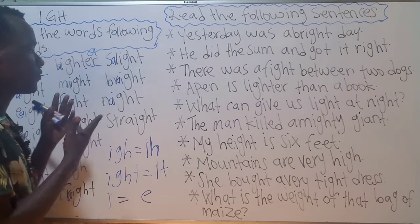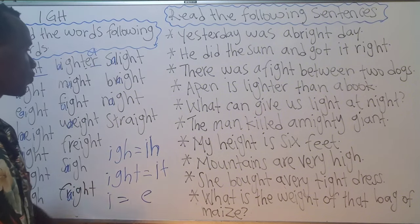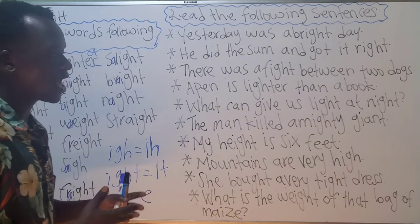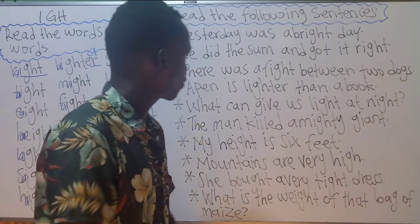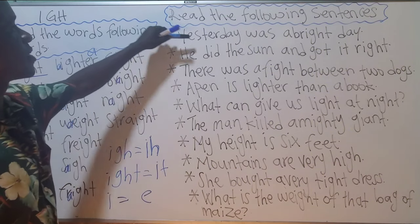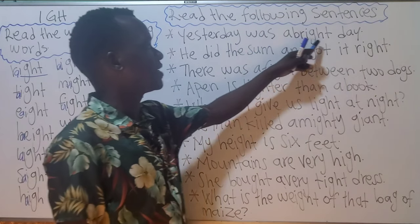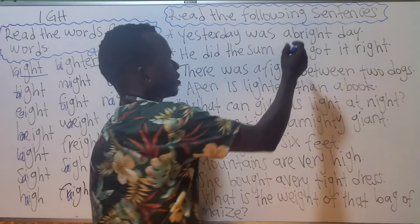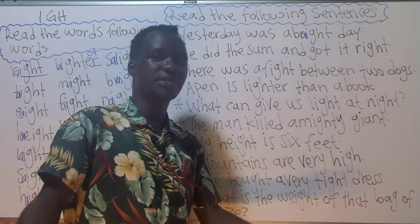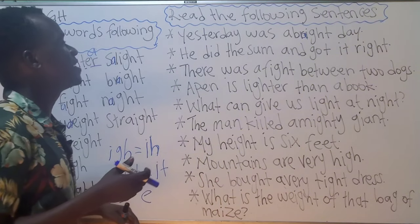These sentences are made out of the words we have just been learning. Let us see how we can use them in our daily conversation. Number one: 'Yesterday was a bright day.' Bright — invisible A here. A bright day simply means that yesterday there was a lot of sunshine.